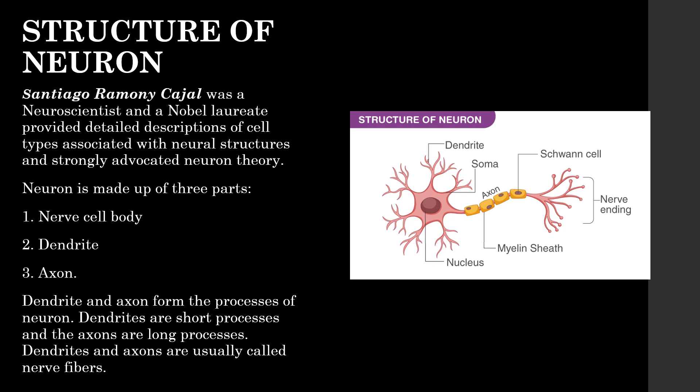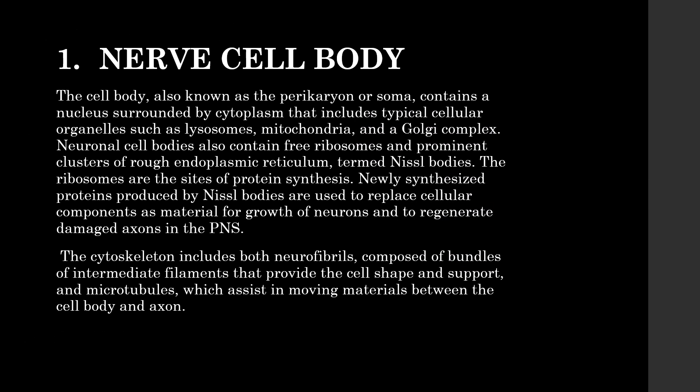Dendrites are short processes and axons are long processes. Dendrites and axons are usually called nerve fibers. The cell body, also known as perikaryon or soma, contains a nucleus surrounded by cytoplasm that includes typical cell organelles such as lysosomes, mitochondria, and Golgi complex. Neuronal cell bodies also contain ribosomes and prominent clusters of rough endoplasmic reticulum termed Nissl bodies, which are the sites of protein synthesis. Newly synthesized proteins are used to replace cellular components, support growth of neurons, and regenerate damaged axons. The cytoskeleton includes neurofibrils composed of intermediate filaments that provide cell shape and support, and microtubules which assist with moving materials between the cell body and axons.